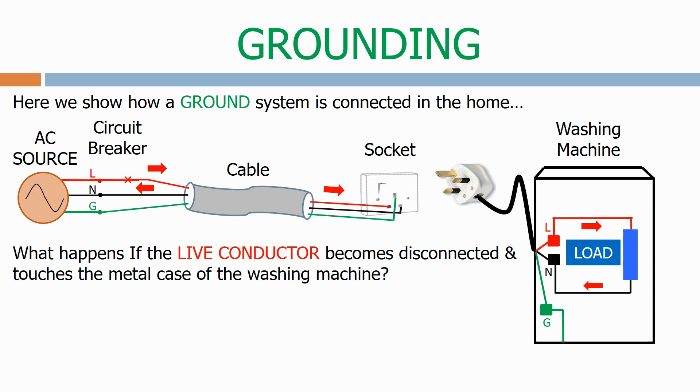What happens if the live conductor becomes disconnected and touches the metal case of the washing machine? Current now flows from the live through the case of the washing machine and back through the ground connection. This path has a much lower resistance when compared to going through the load. Therefore the current increases substantially.